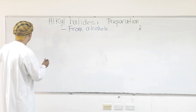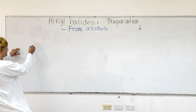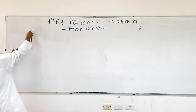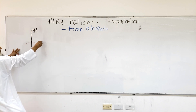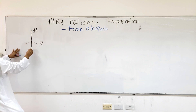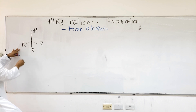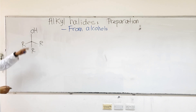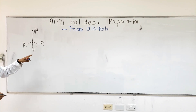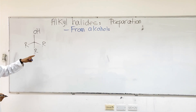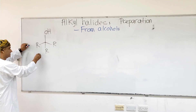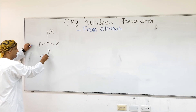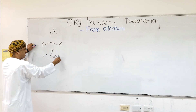This is the general structure of tertiary alcohols. Tertiary alcohols have a carbon that is bonded to the OH group, and that carbon is also bonded to three groups, and that's why this kind of alcohol is described as a tertiary alcohol.